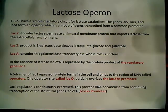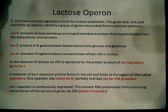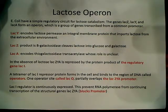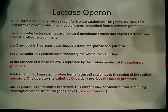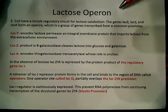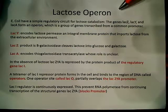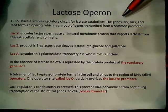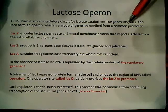In this video I'm going to discuss the classical example of gene regulation, and that is the lactose operon. What is a lactose operon? It's basically a regulatory circuit for lactose catabolism, and it consists of three structural genes.